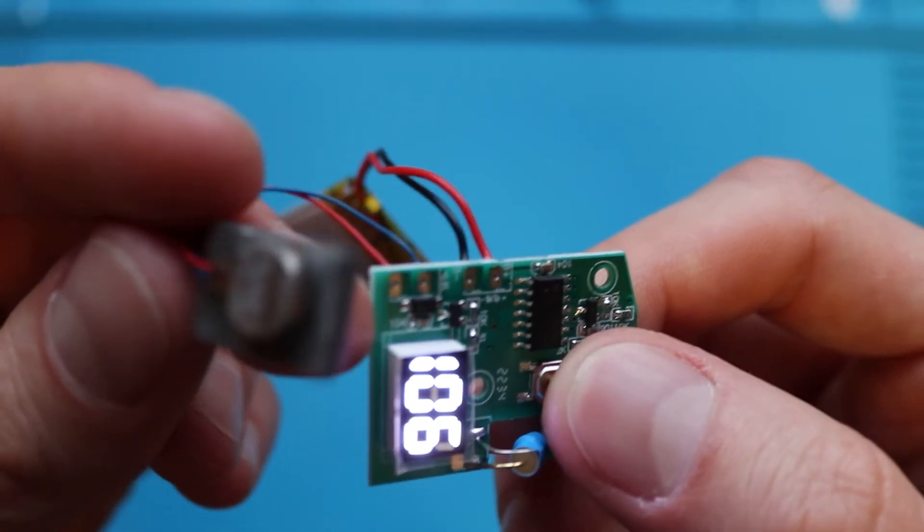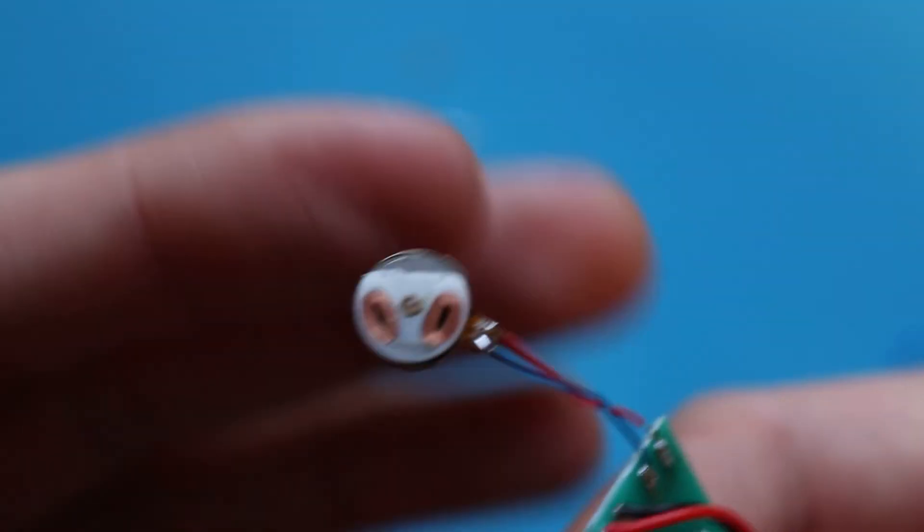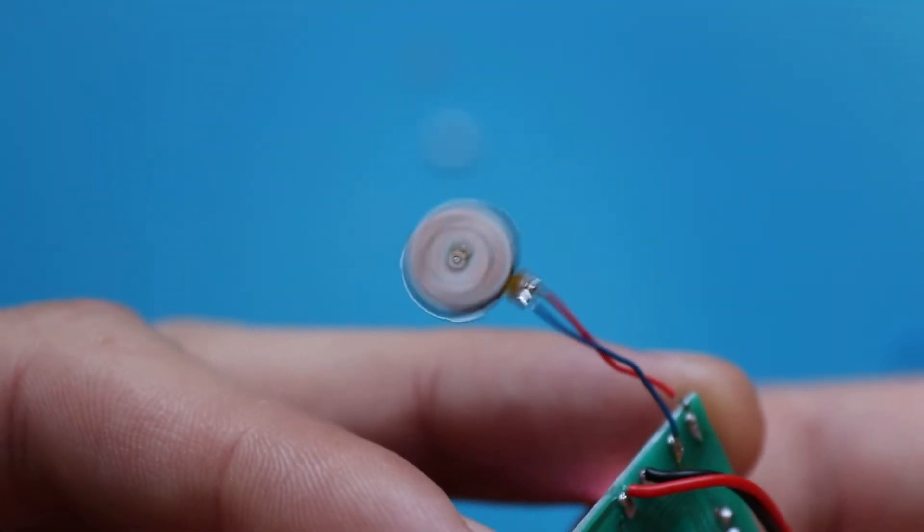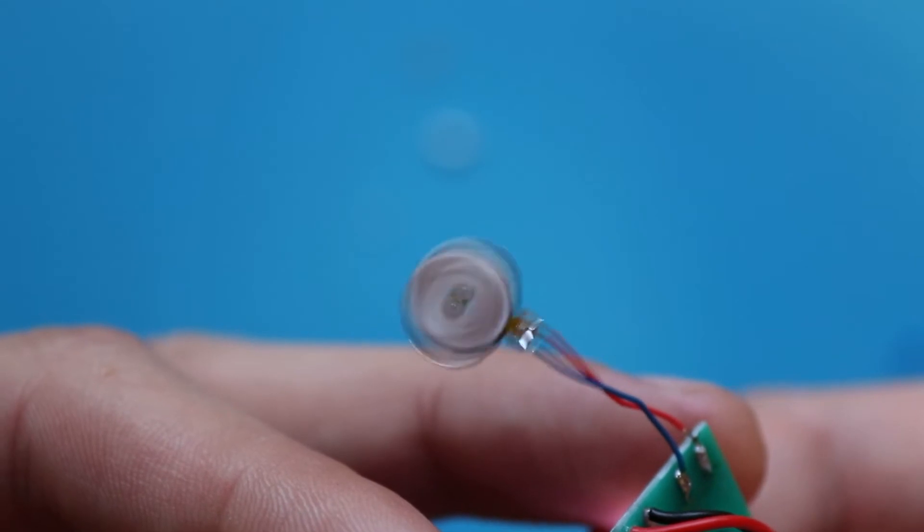Now let's have a look at the vibration motor. Removing the lid, we can see two coils glued into the rotor. The rotor itself is mounted on the shaft.